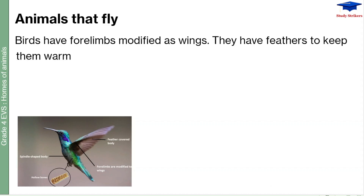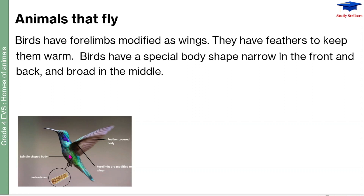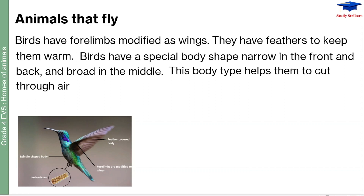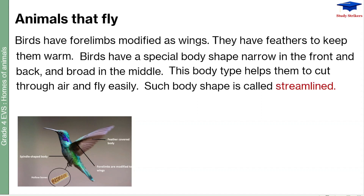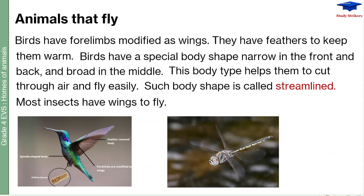Feathers keep birds warm and also help them retain moisture. Birds have a special body shape that is narrow in the front and back but broad in the middle. This body type helps them cut through the air and fly easily. Such a body shape is called a streamlined shape. Most insects also have wings to fly.